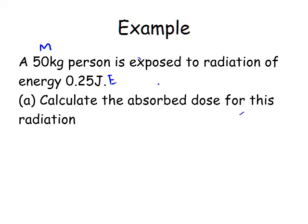The absorbed dose D is the energy divided by the mass, which is 0.25 divided by 50, giving us 0.005 grays.